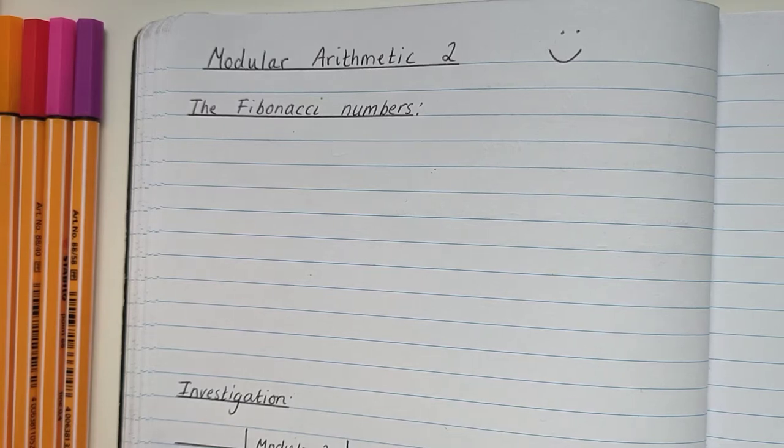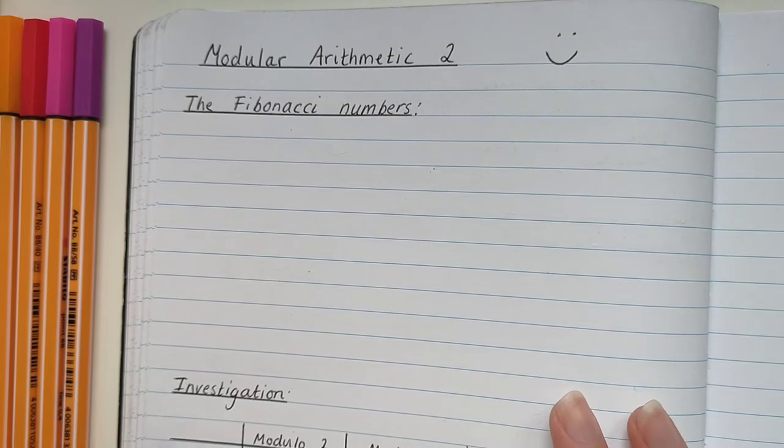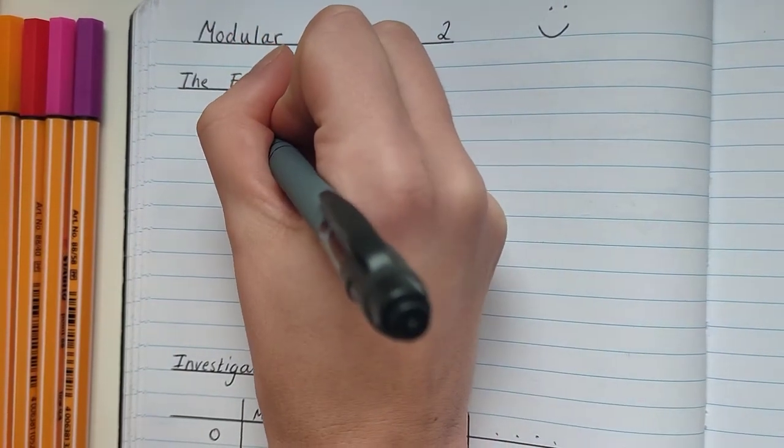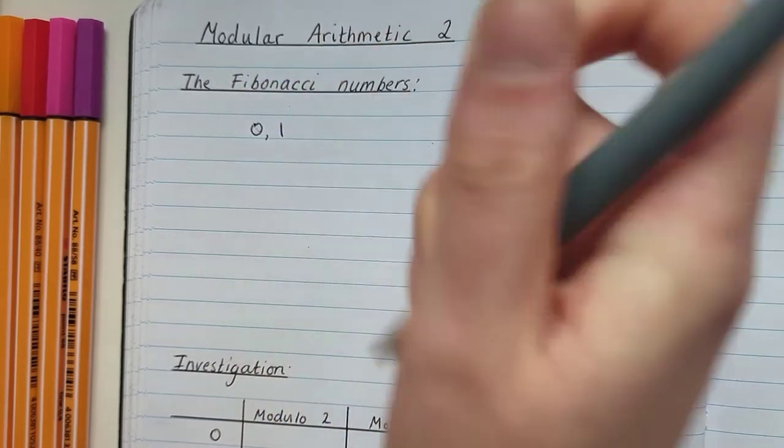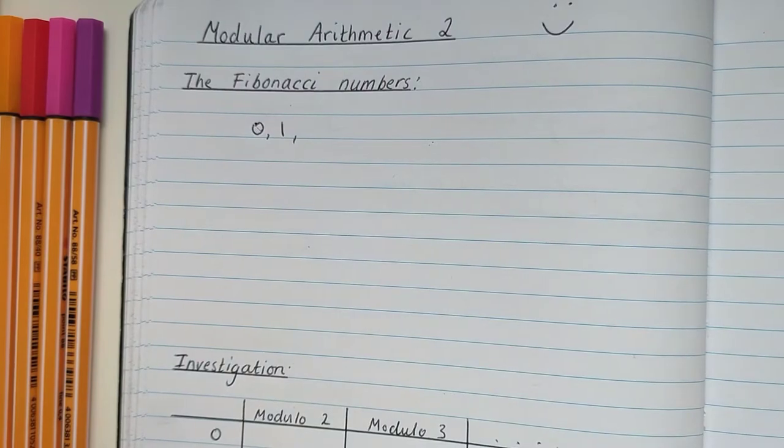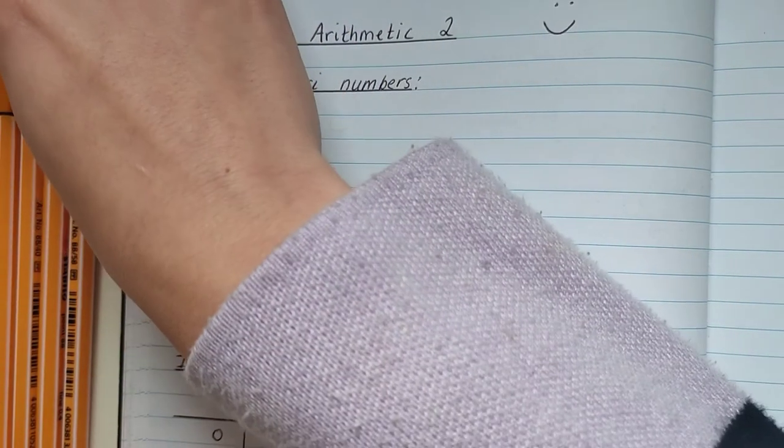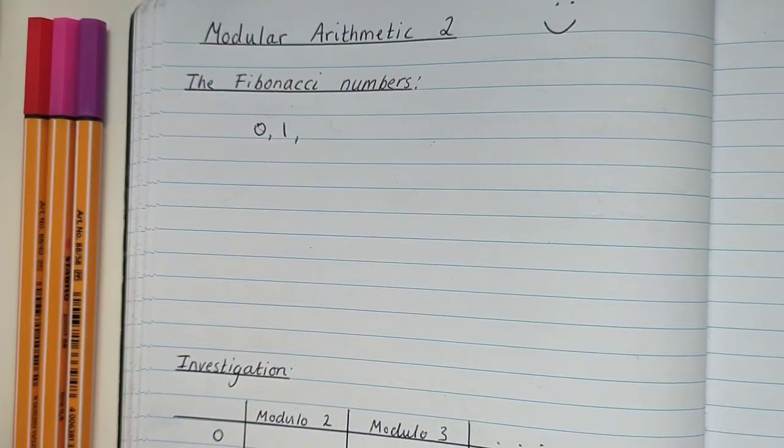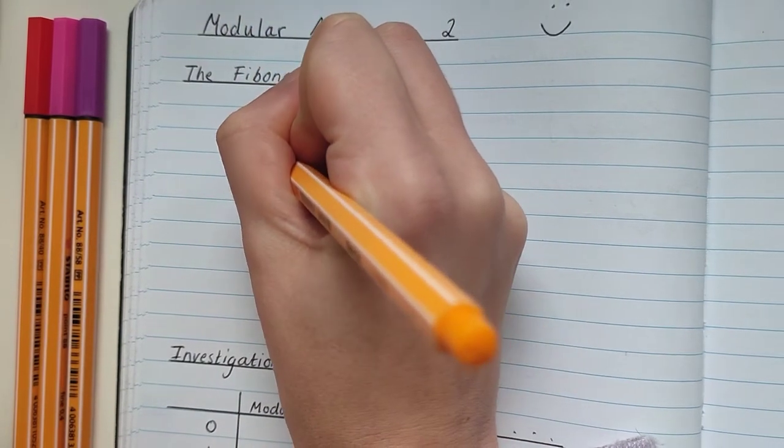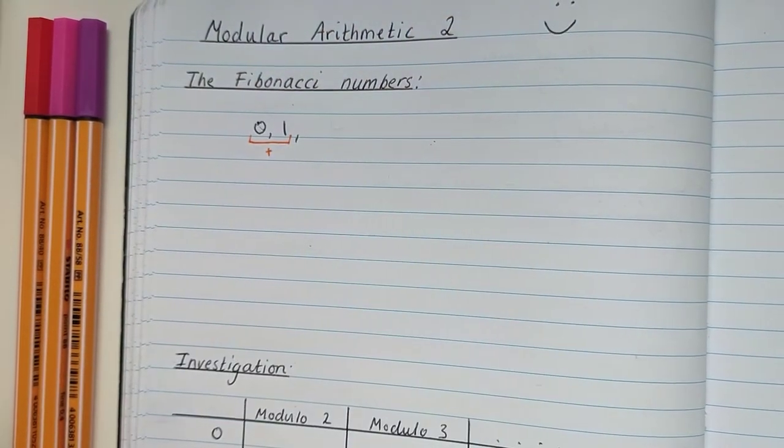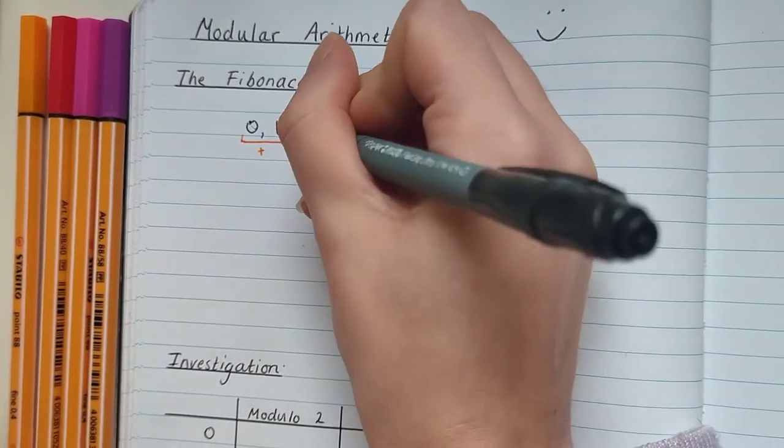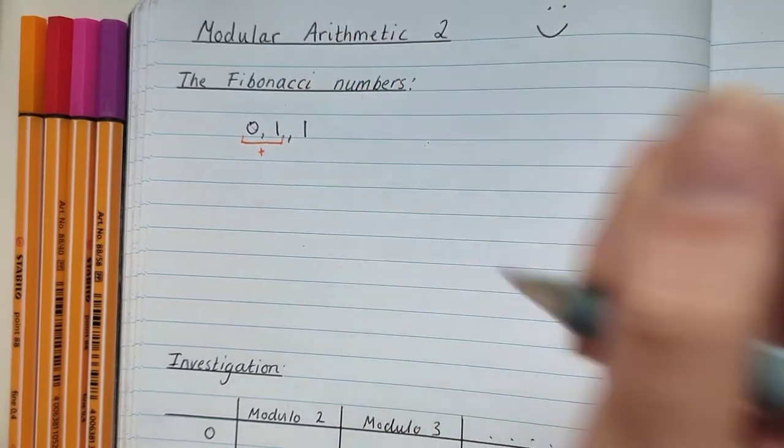In the Fibonacci sequence, the first two numbers that we start with are 0 and 1. Now the rule to get the next number is to add the previous two numbers together. So in this case we've got a 0 and a 1. We're going to add those numbers together. 0 plus 1 gives us 1, so that's the next number in the sequence.